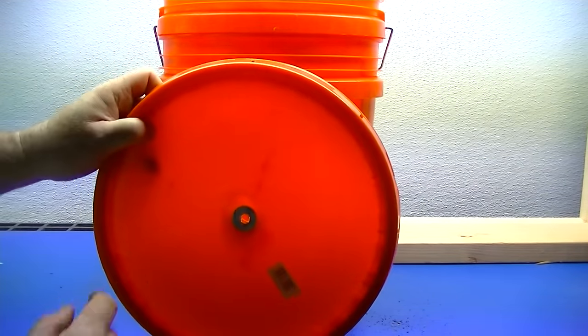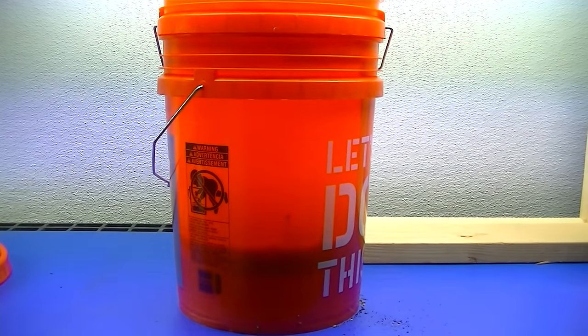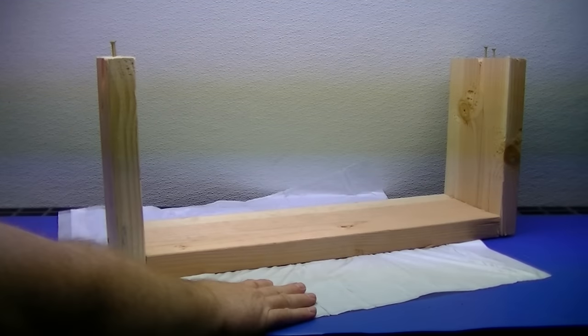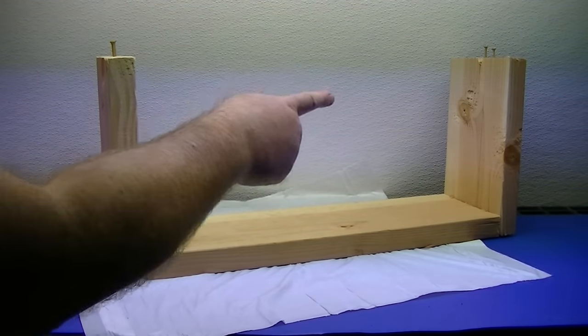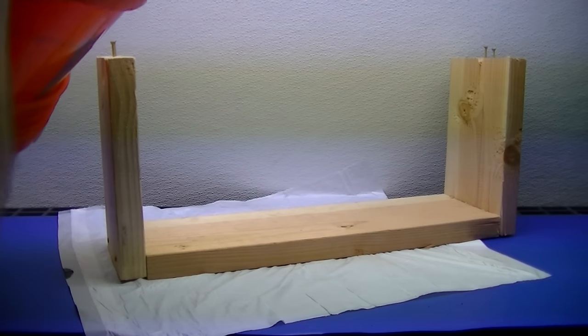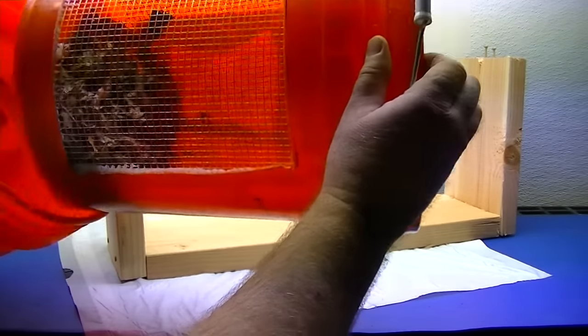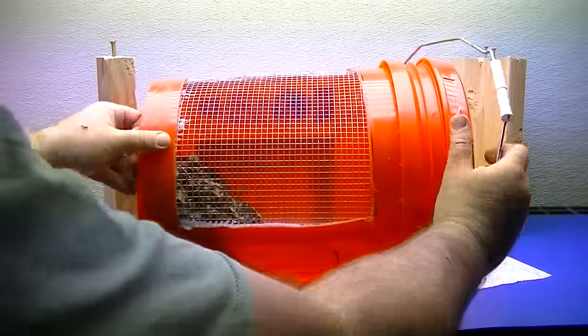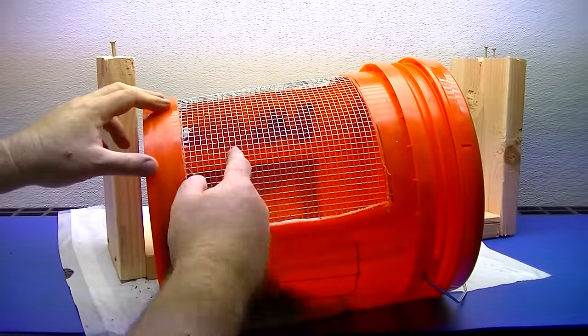Here we have a piece of plastic we laid down that we're catching worm castings. We have our stand that we made, and I'll show you how to do that. Then we just slide our bucket out like so, and we're going to keep this bottom part down.